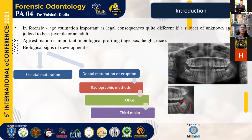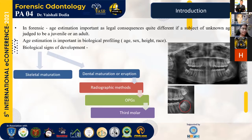In forensics, age estimation is important because the legal consequences are quite different for juvenile and adult persons — such as in social rights and the treatment within the criminal and civil legal systems. So age estimation is important for biological profiling.